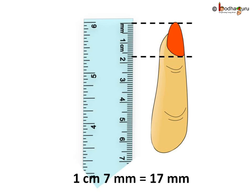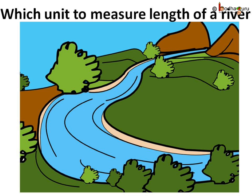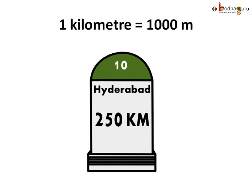Try and find out your nail's length in millimeters. Now, how long is the river Ganges? It is very long. Its length is measured in kilometers. Can we measure its length in centimeters? No, that would be very difficult. 1 kilometer is equal to 1000 meters.